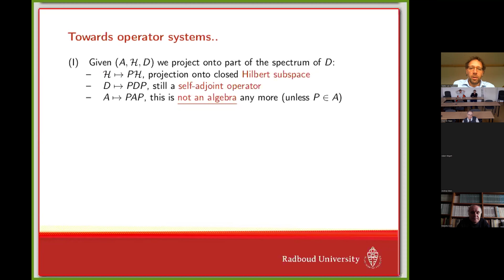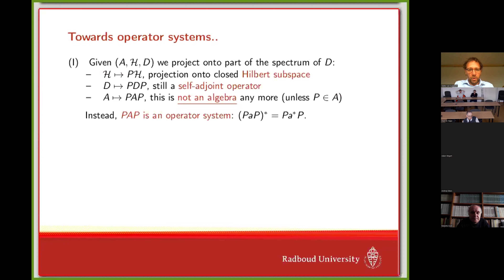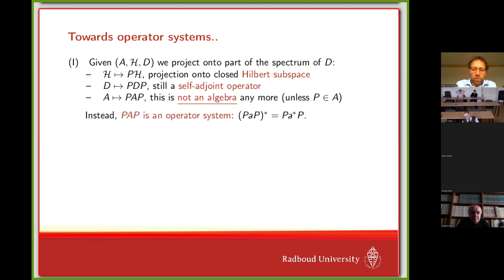Now that's not an algebra anymore — unless the projection is actually in the algebra, but that's never really the case if the projection is a spectral projection for D. The point is that if P is not in A, then PAP is not an algebra. However, it's an operator system. This is where the idea of operator systems enters the theory of spectral triples: PAP* equals PA*P, so you keep the star structure but lose the multiplicative structure. That's essentially the basic idea of operator systems. It suggests that we should replace A with the operator system PAP.